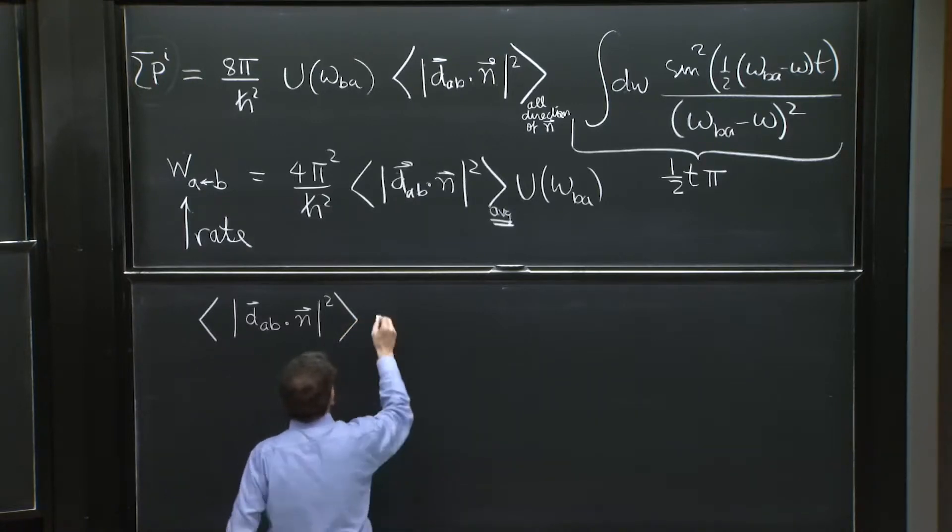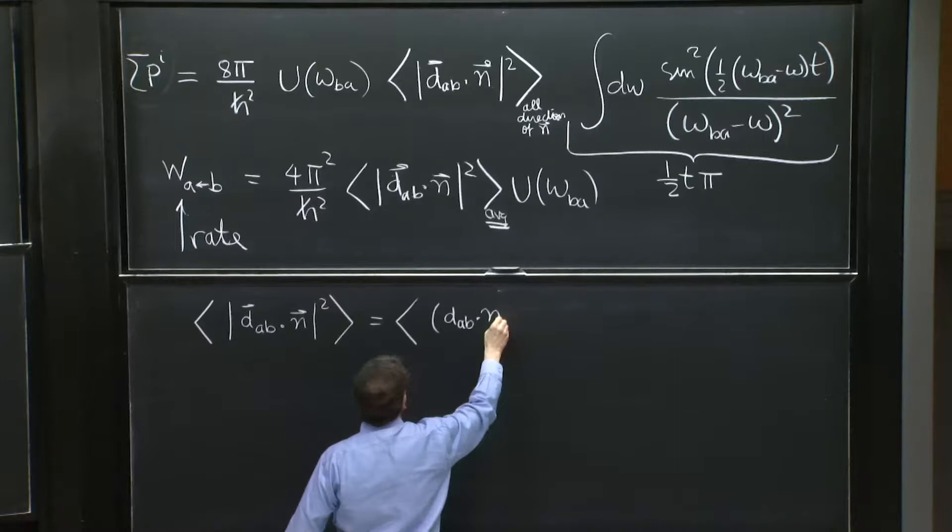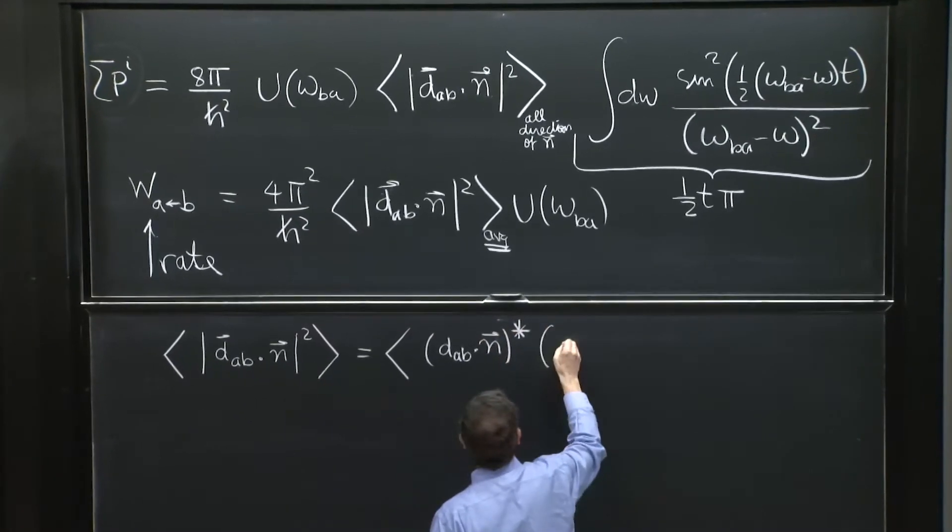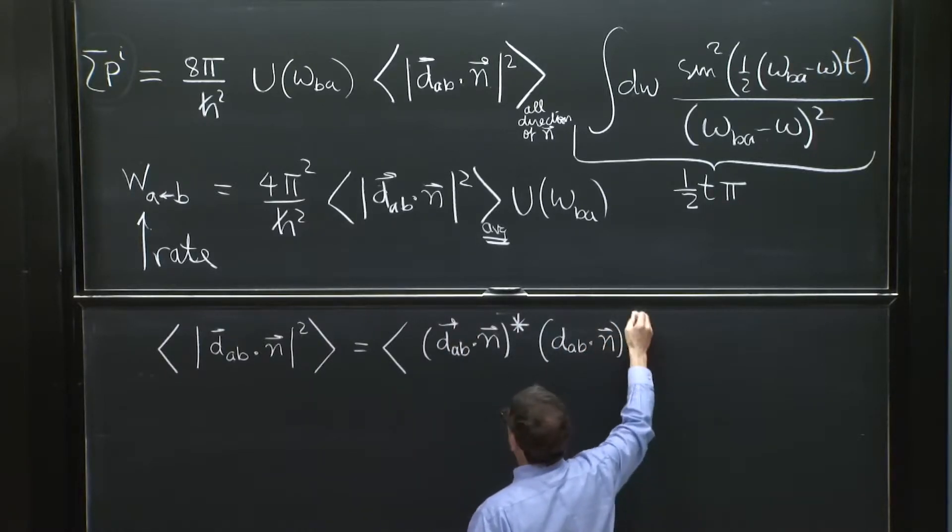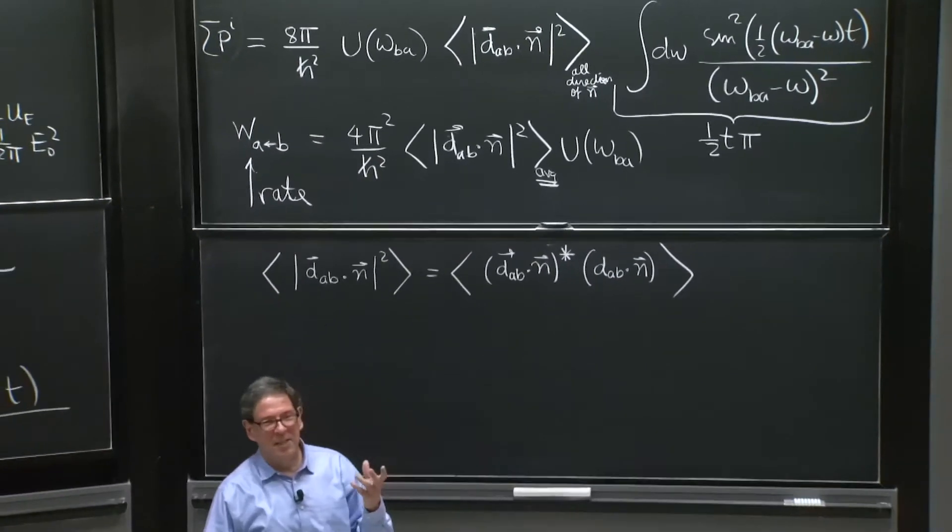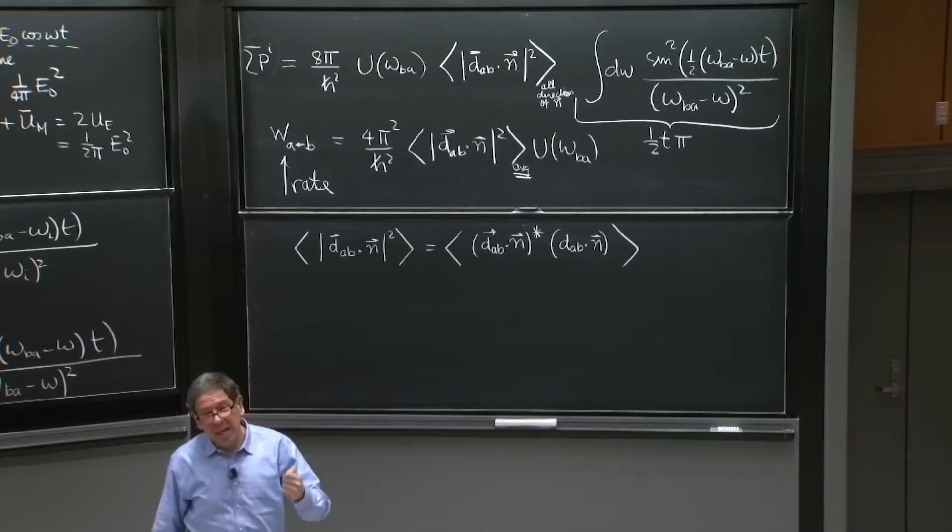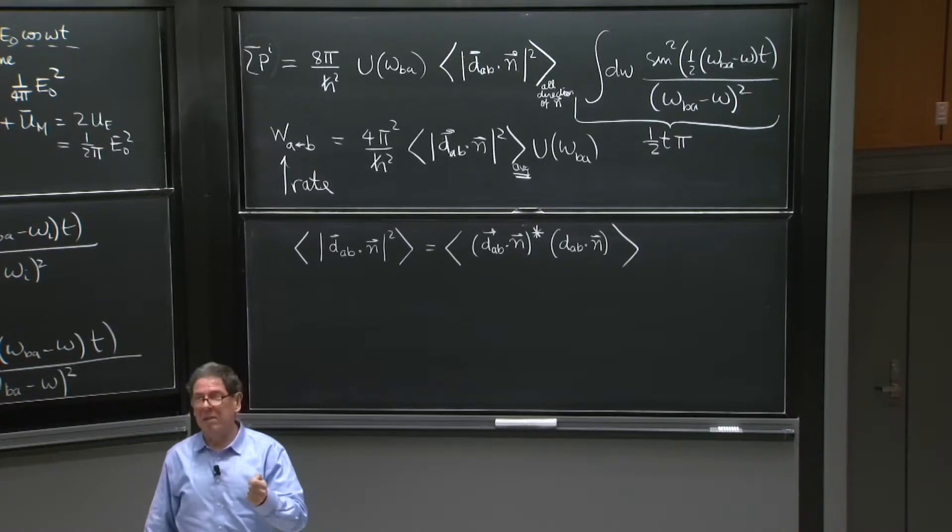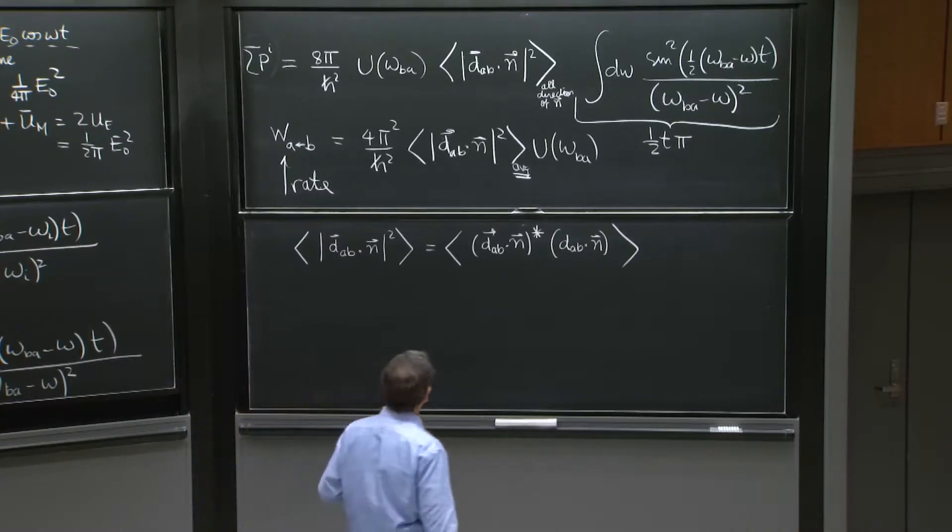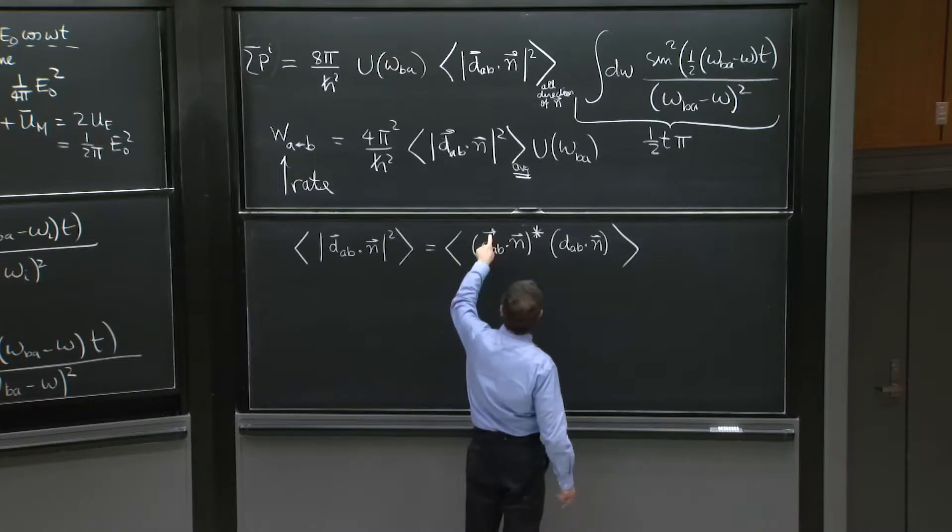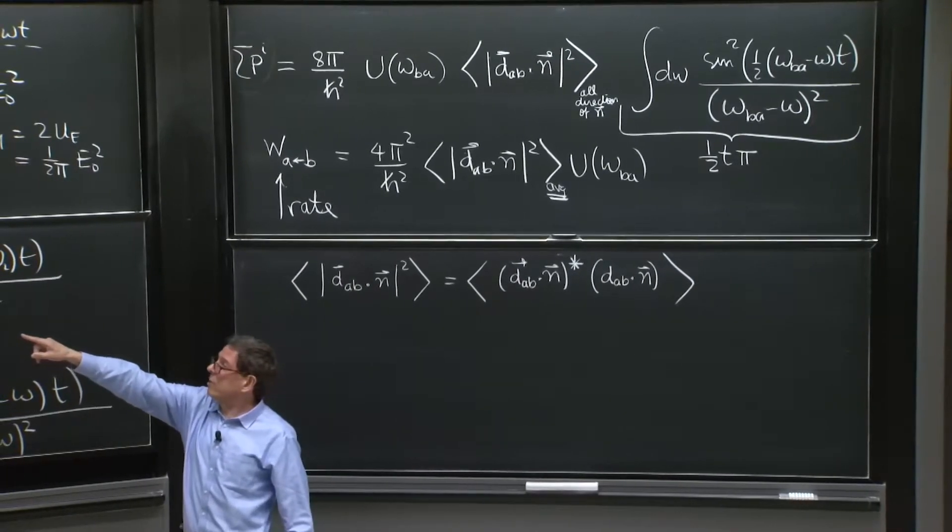There is the average of d_ab dot n squared. So this is the average of d_ab dot n complex conjugate times d_ab dot n. So it's good to do this thing, because actually, you have to face as to what these symbols really mean. D_ab is a vector with complex components. The electric field is a vector, but it has real components. D_ab is a vector. Why is it a vector? Because it has a vector index here. It really came from this operator over there. D is qr.